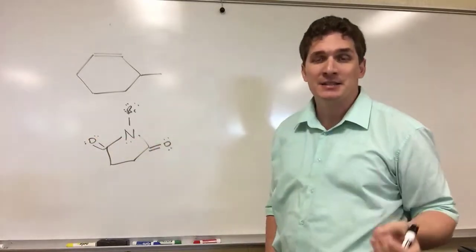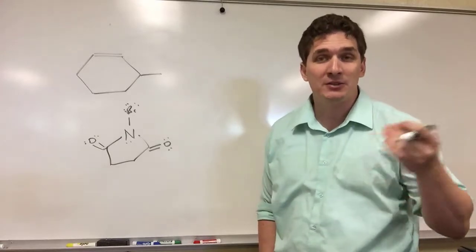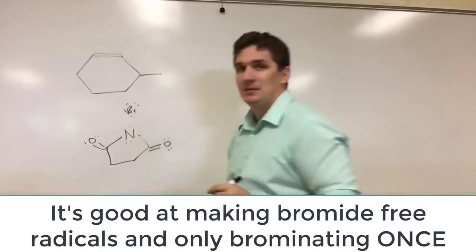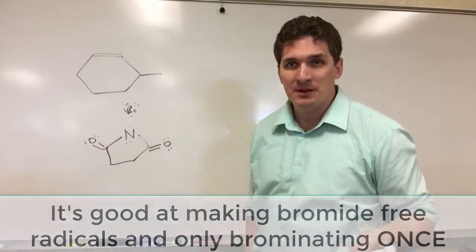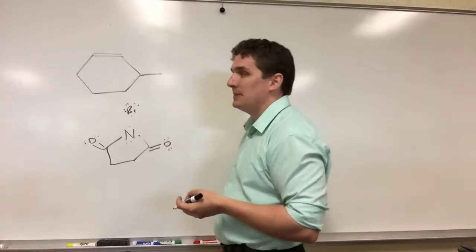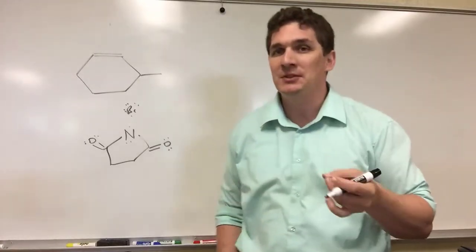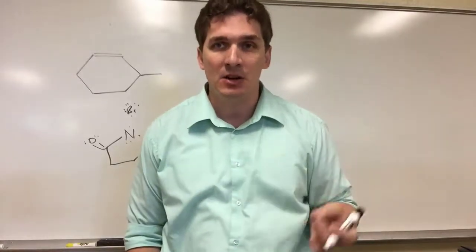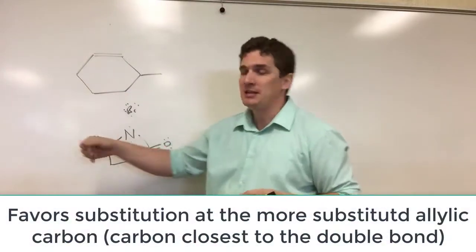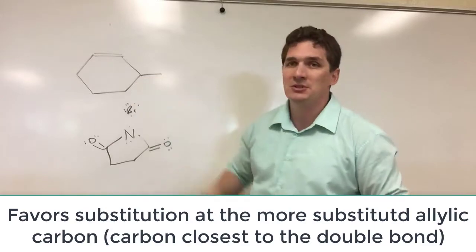The nice thing about NBS is that it's a very good free radical maker. In fact, what it does is it breaks apart the nitrogen-bromine bond. It's going to generate a free radical on our compound, and it's going to favor substitution at the more substituted allylic carbons. The allylic carbon is the carbon nearest the double bond. So in this case, we would get bromine substitution here on this carbon.